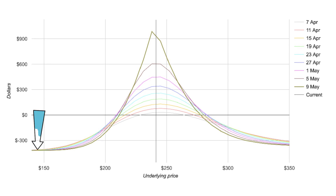Our maximum loss point is right around $145 a share. This is pretty unlikely — for Apple to drop this low, we would need a serious event to occur — but if it were to drop to $145 a share, we would suffer a maximum loss of $420. On the other side, if Apple were to rise to something like $320 or $350 or other absurd prices, we would most likely come close to losing just about the same amount at expiration, maybe slightly less, something like minus $350.